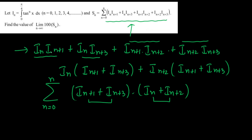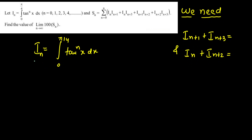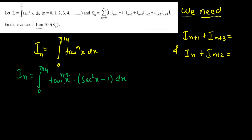Now I am going to calculate the reduction formula for I(n). I can write I(n) as integration from 0 to pi by 4. I am going to split this into two terms: tan(x) raised to power n-2, and then tan²(x). That tan²(x) I am going to write as sec²(x) minus 1, dx. The reason I split with a difference of 2 is because we want the index difference to be 2. Since the derivative of tan(x) is sec²(x), I can treat tan(x) as the variable. The integration of tan(x) raised to power n-2 gives the term evaluated from 0 to pi/4, divided by n-1.